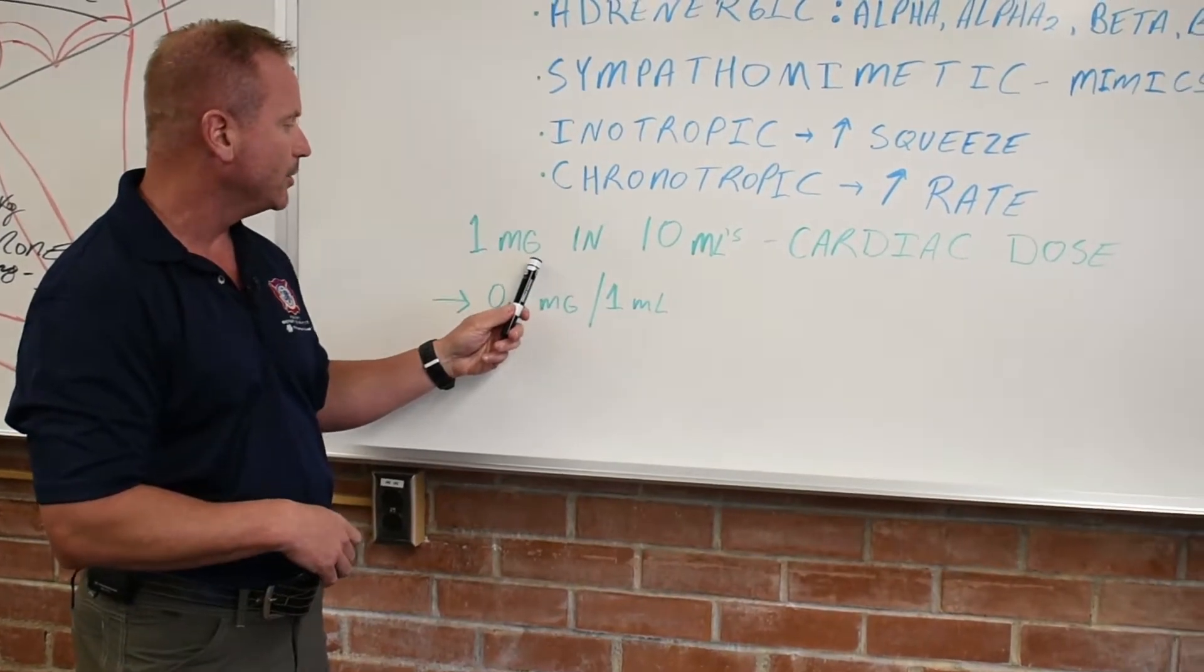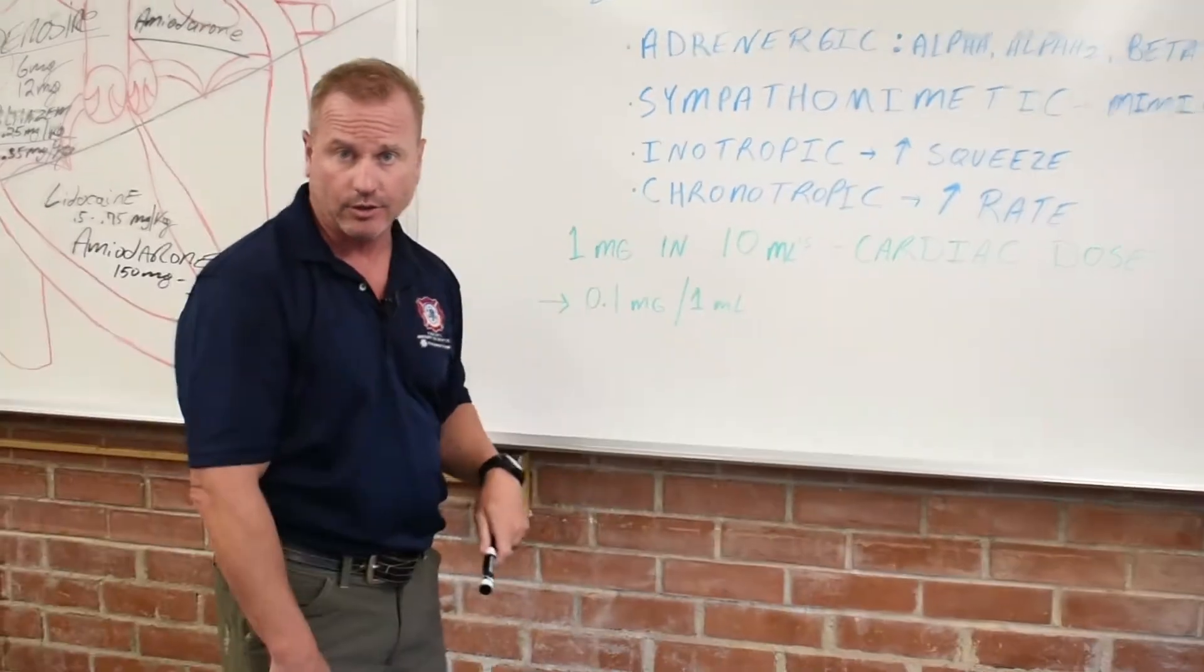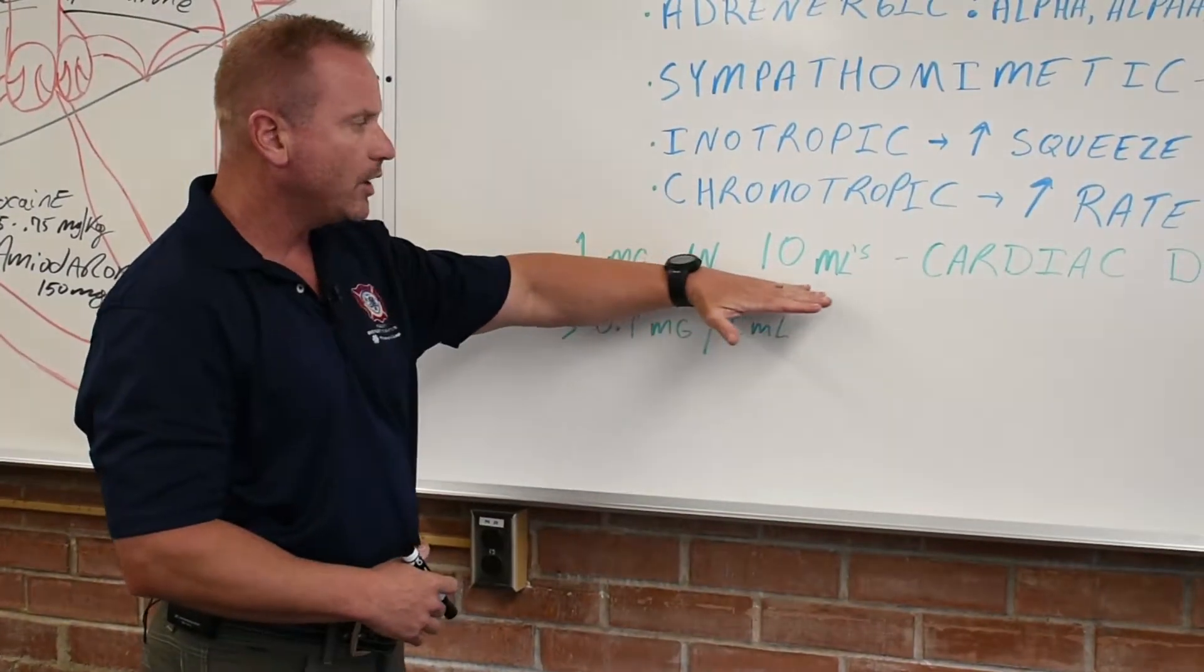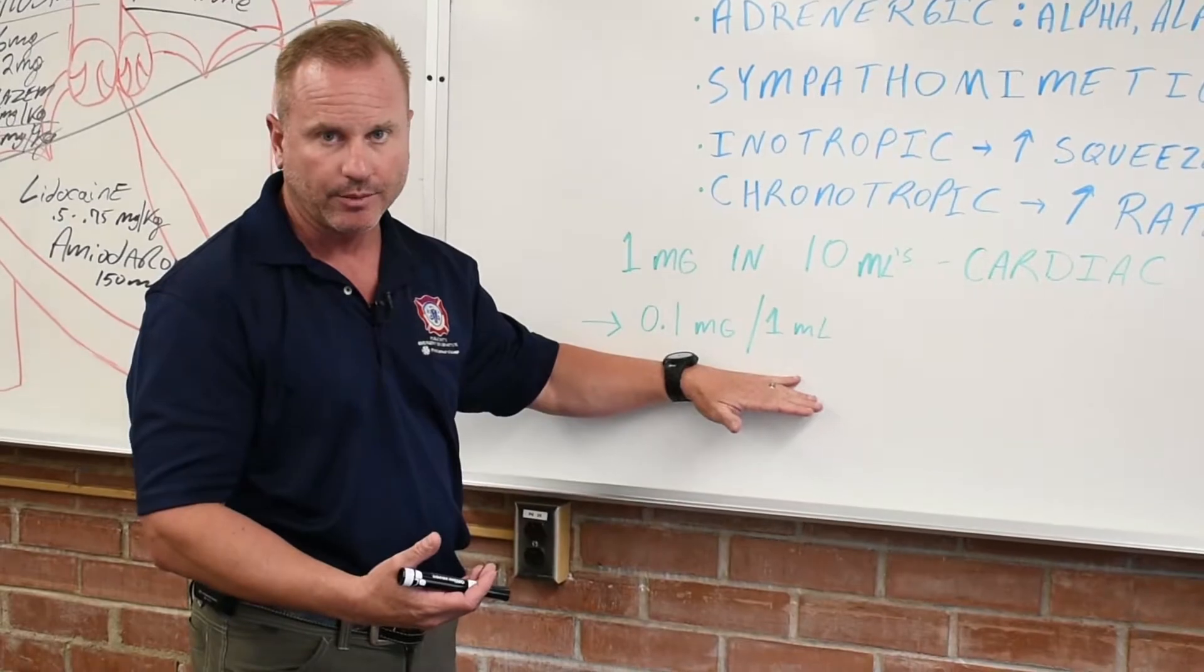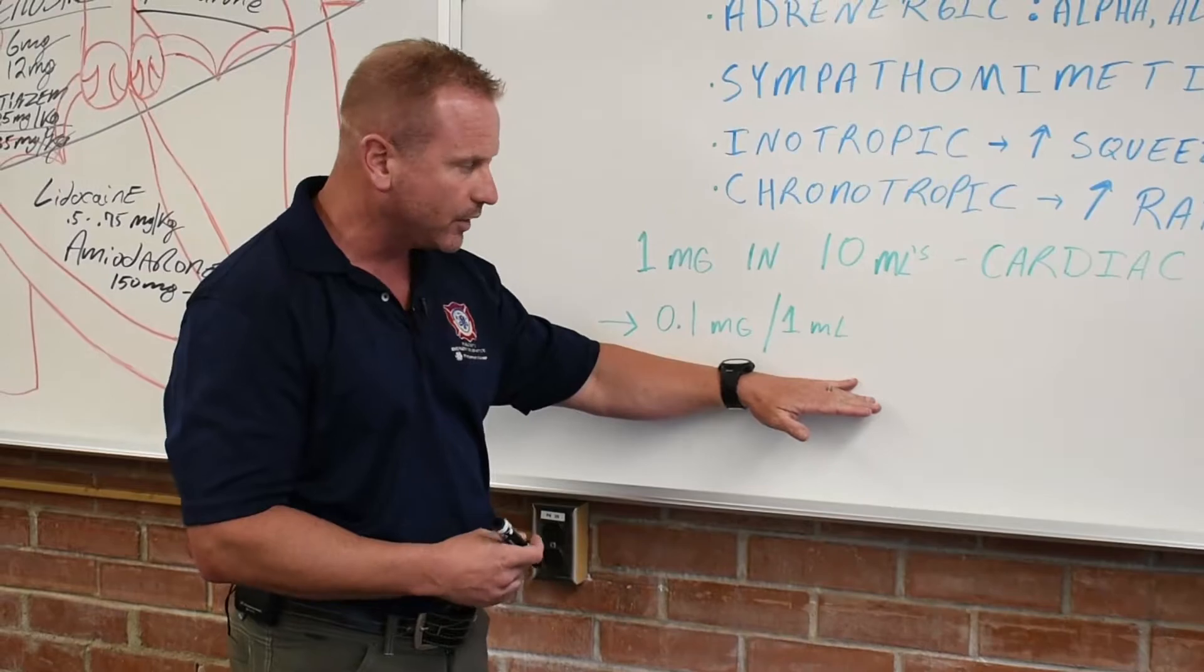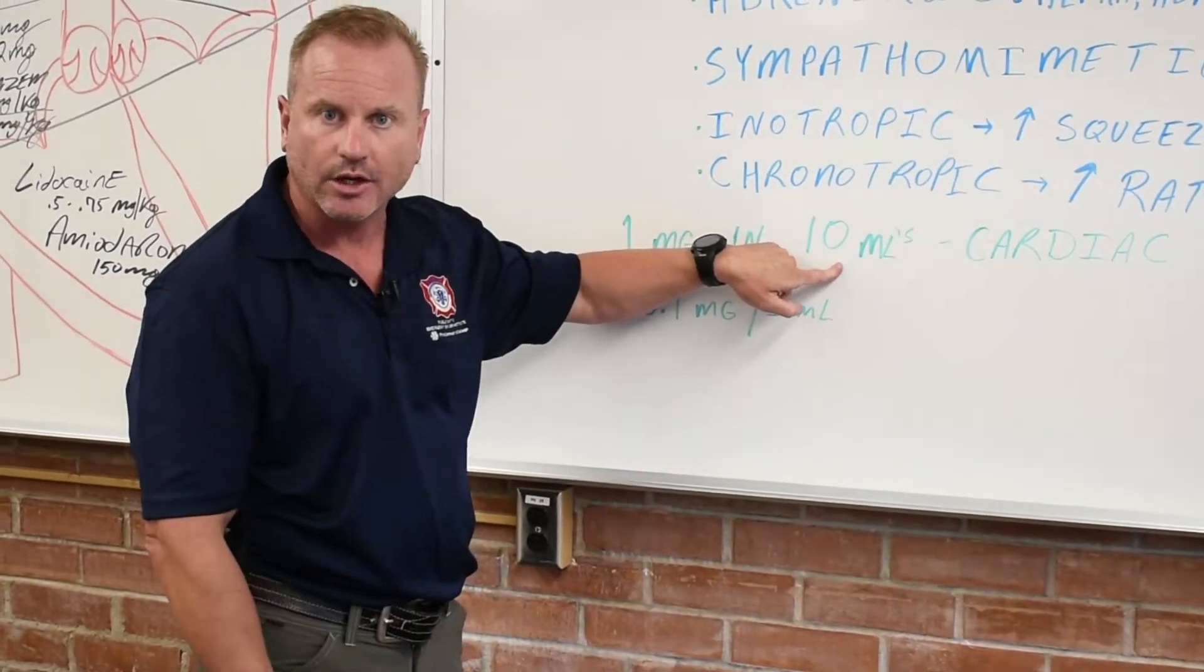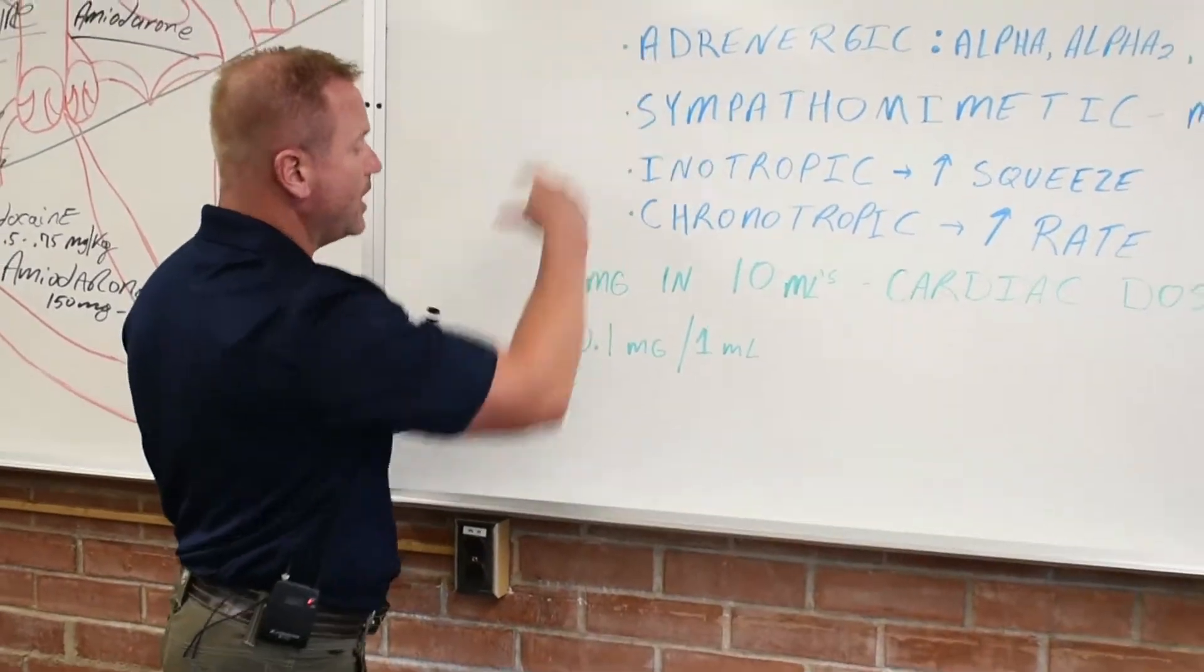But it'll tell you on every drug vial, and we'll show you when we get to the hands-on part momentarily, epinephrine for the cardiac dose comes in one milligram in 10 mls. That's your cardiac dose epi. And on the vials, just about every single drug that we give, it's going to have what the concentration is, and then underneath it, it will usually break it down to its most simplest form. And this is another great way of learning pharmacology.